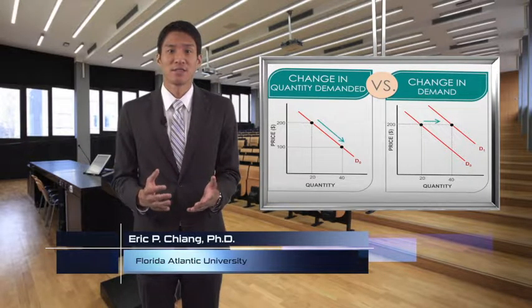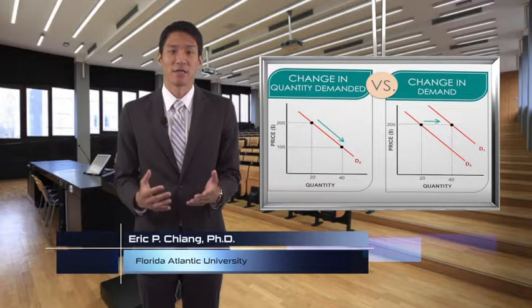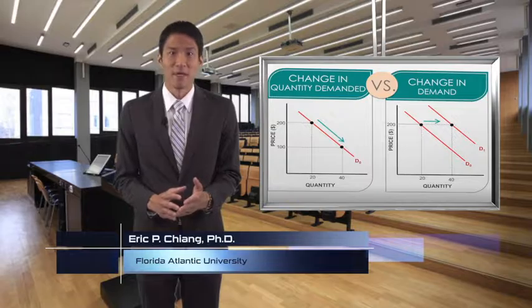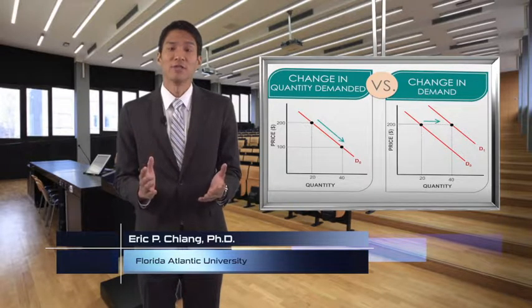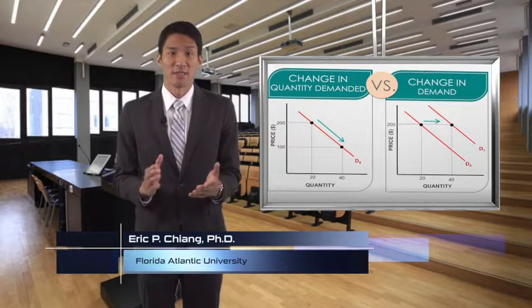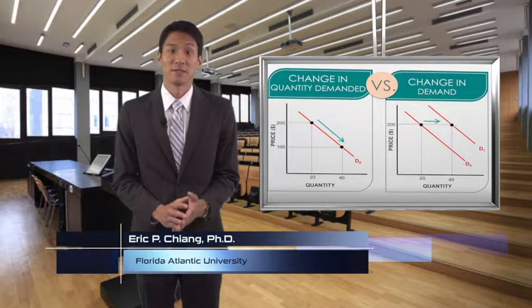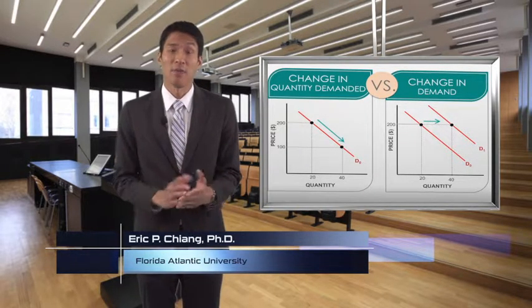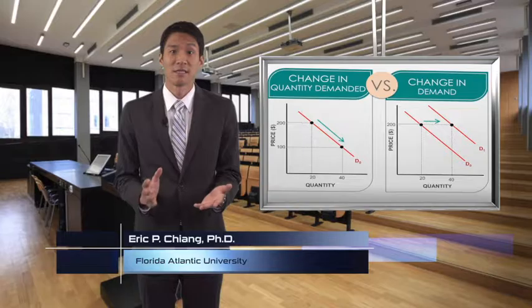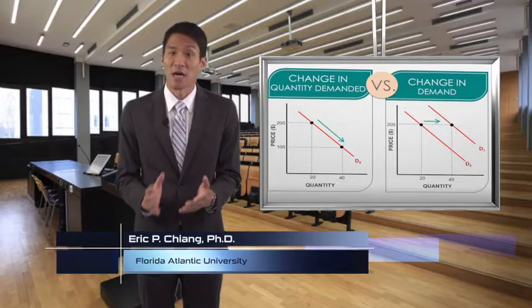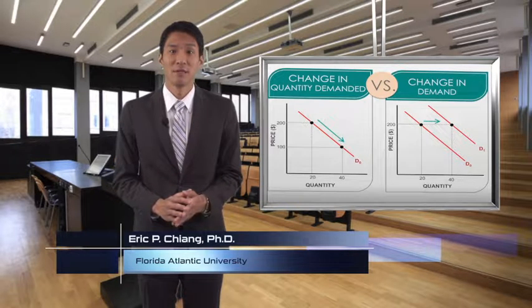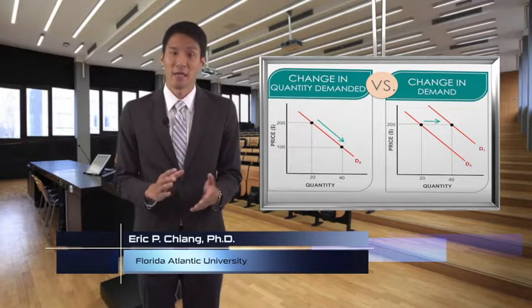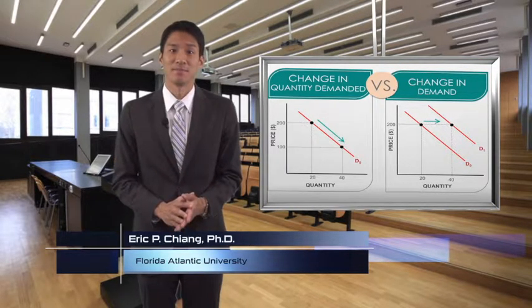Let's discuss the general factors that cause the demand curve to shift. These factors include changes in tastes and preferences, income, prices of substitutes and complements, the number of buyers, and expectations.